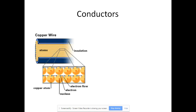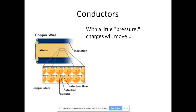On the sheet I gave you, I have a diagram of a cross-sectional area of copper wire. We all know that copper is a very good conductor. The reason being, it has mobile valence electrons. We can see the electrons can flow from one side of the metal to the other and go through those metal cations. If we were to hook this up to a battery and put a little pressure, those electrons would be pushed through — with a little pressure, these charges will move.